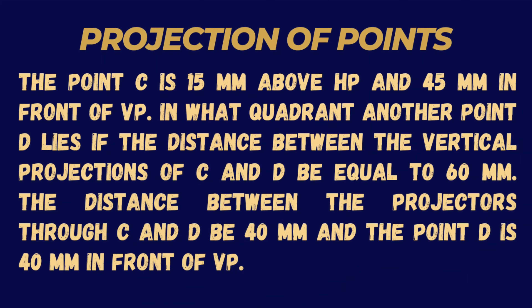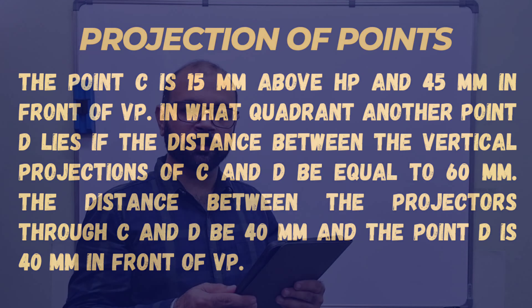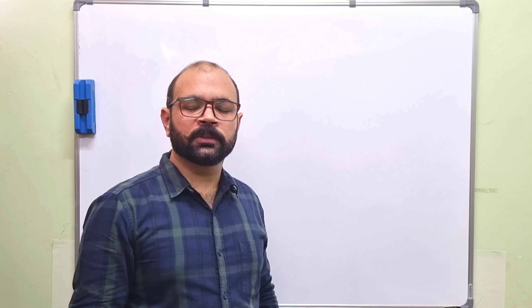Let us read out the question. Point C is 15mm above HP and 45mm in front of VP. In what quadrant does another point D lie if the distance between the vertical projections of C and D is equal to 60mm, the distance between the projectors through C and D is 40mm, and point D is 40mm in front of VP?